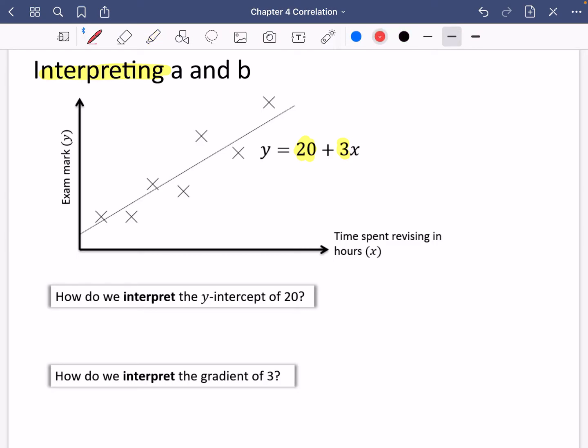So here is a terrible answer. How do we interpret the y-intercept of 20? If we just said it is where the line crosses the y-axis, this is an absolutely terrible answer because it's not explaining anything. It's just talking about the graph. We need to put it into the context of the question.